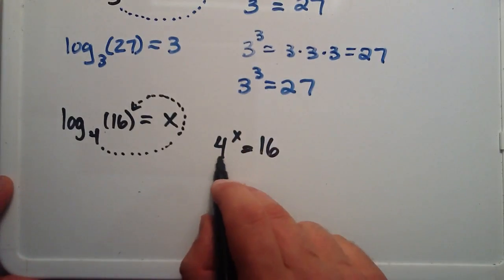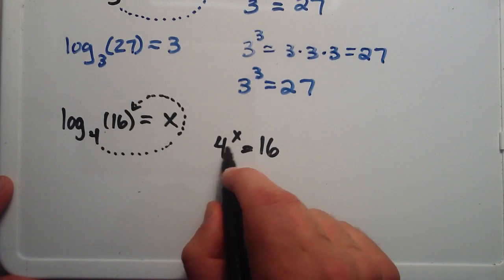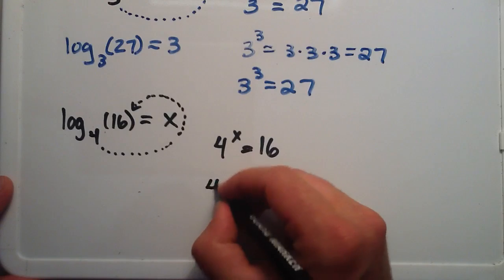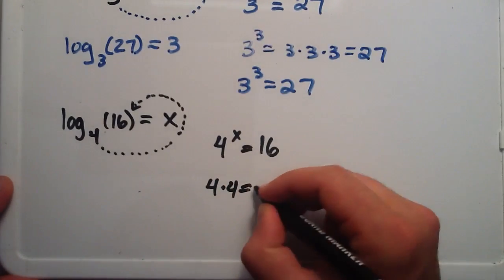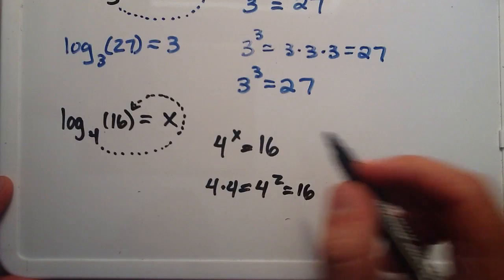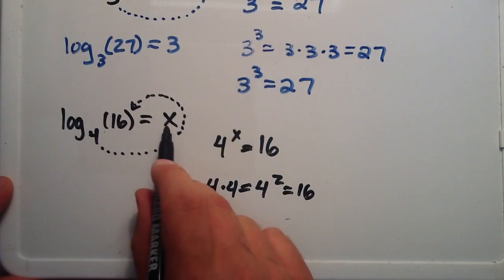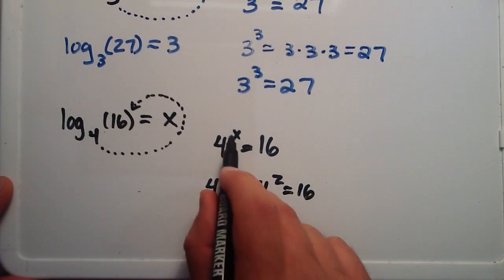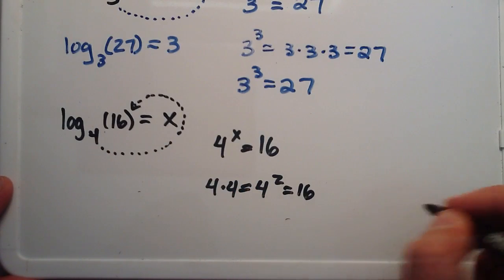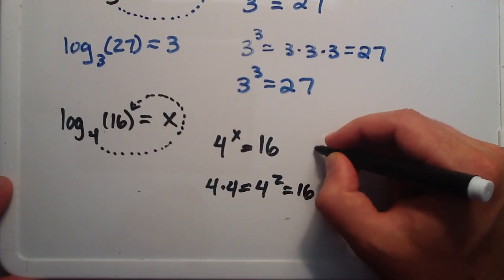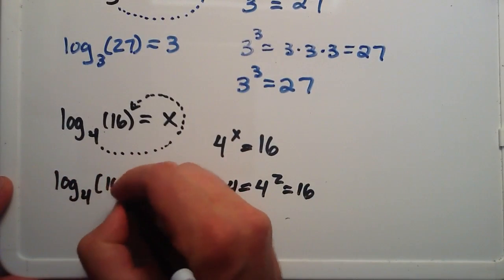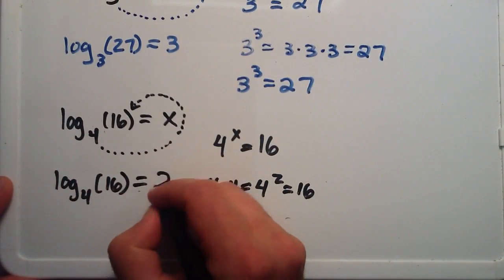So 4 times 4 equals 16. So you had to multiply 4 by itself 2 times. 4 times 4 equals 4 squared equals 16. So 4 raised to the x power, which would be 2 in this case, equals 16 following the scorpion tail. So in this case, log base 4 of 16 equals 2.